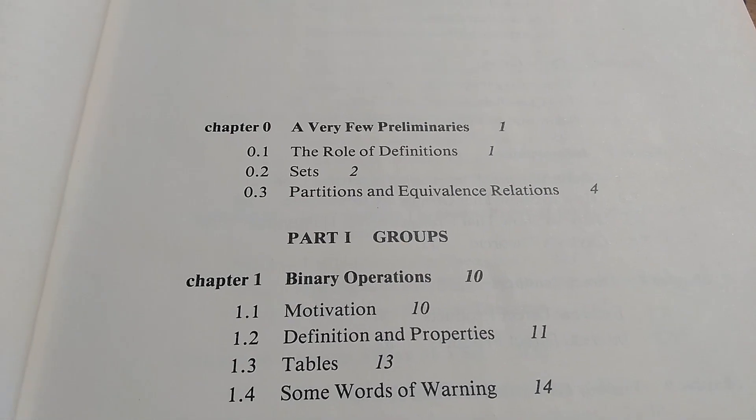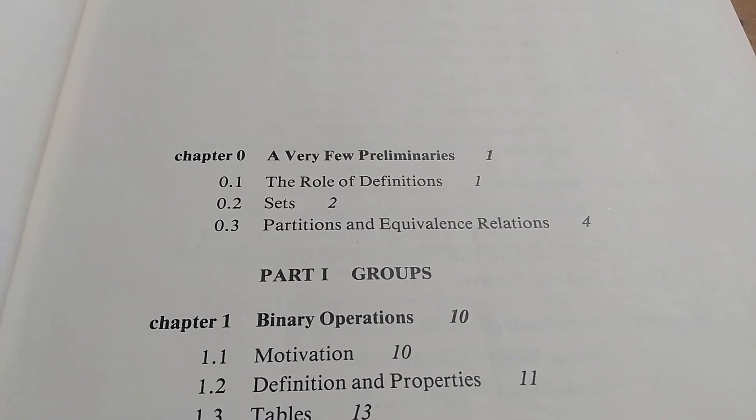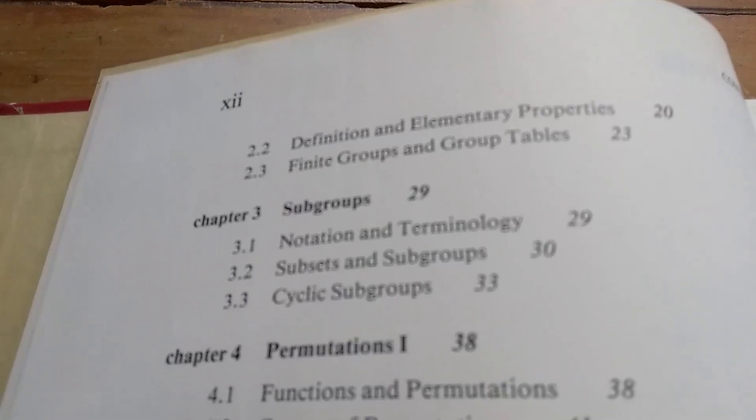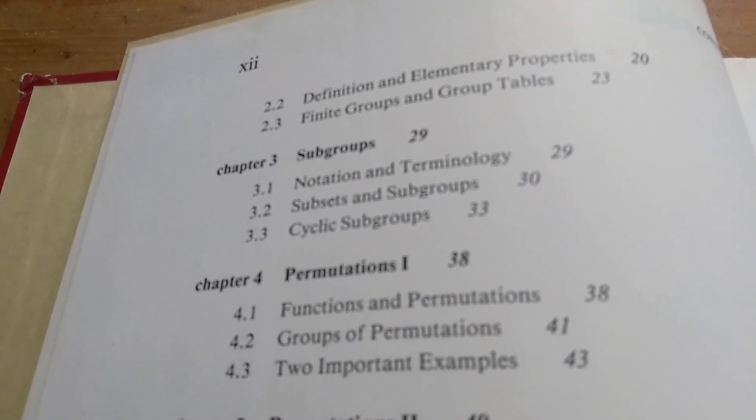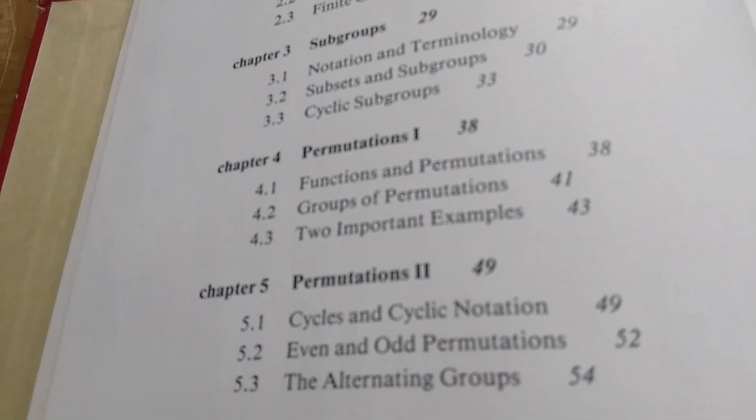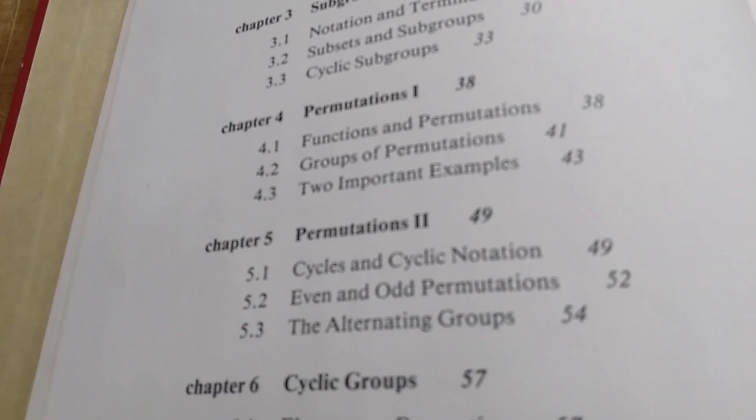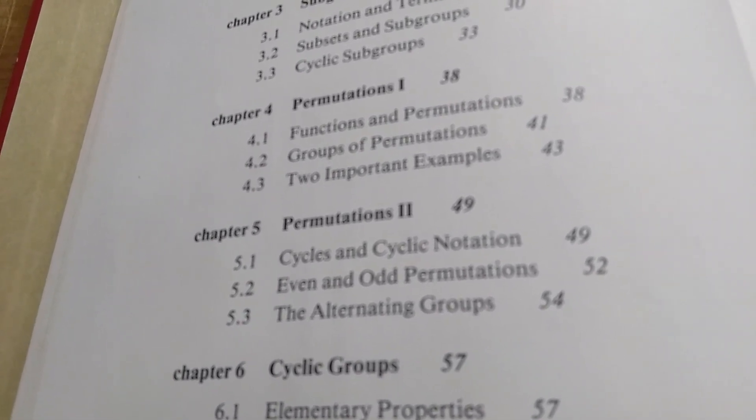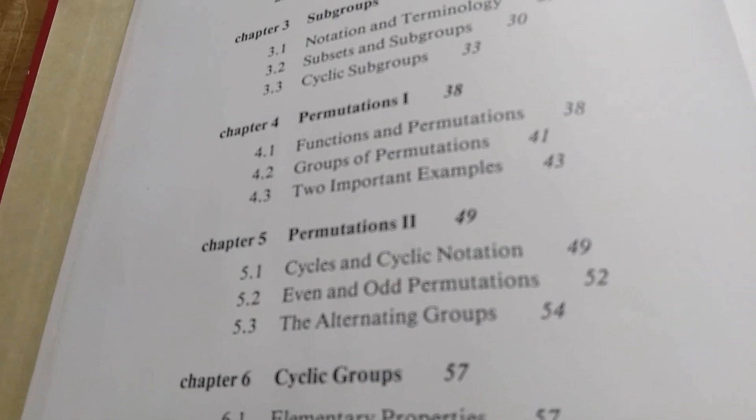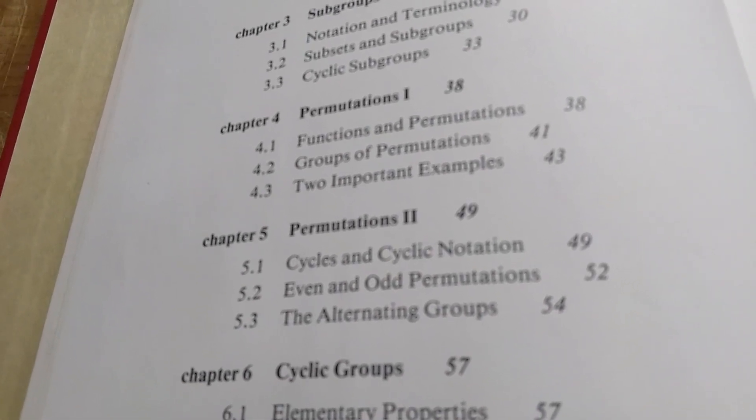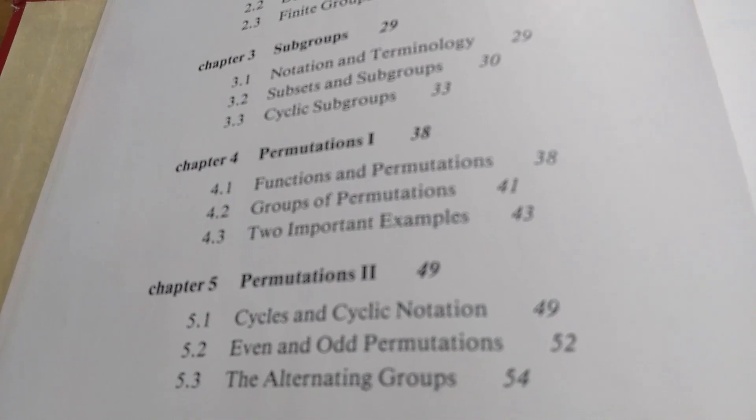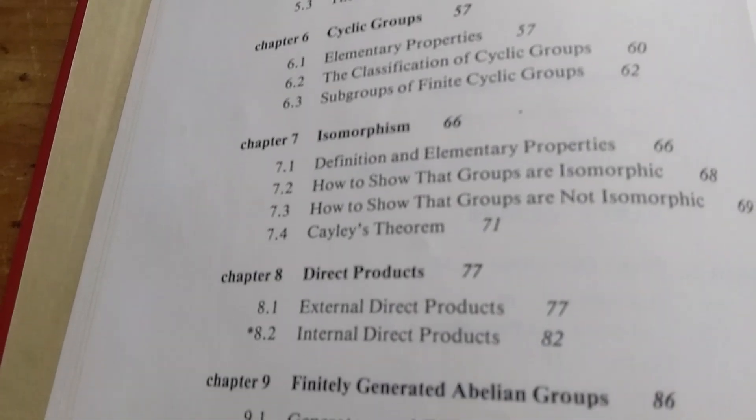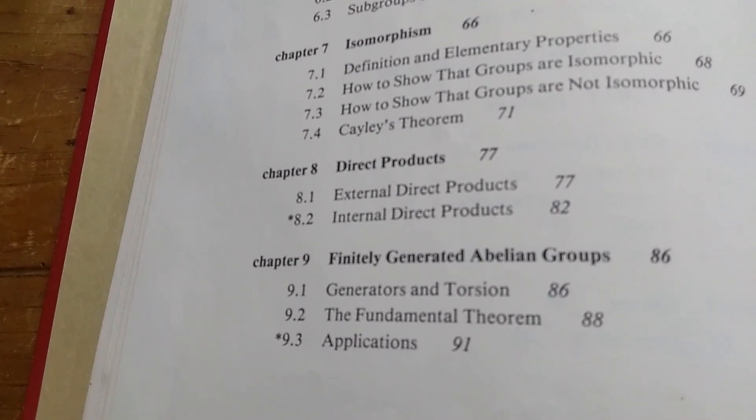The contents of this book are pretty standard. He talks about some preliminaries, and we'll talk more about those in a minute. Binary operations, groups, goes on to subgroups, then permutations, and then permutations part two. Note Fraleigh, if I recall correctly, does the cycle multiplication backwards. So he does it like Wolfram Alpha does it, which is the non-standard way. He doesn't do it the way most other books do it. Then he goes on to cyclic groups, isomorphism, direct products, and then finally finitely generated abelian groups.